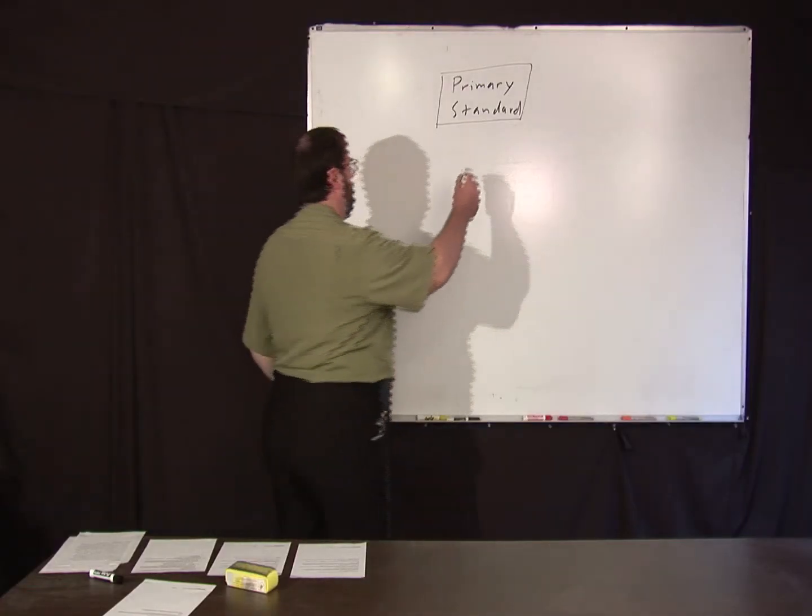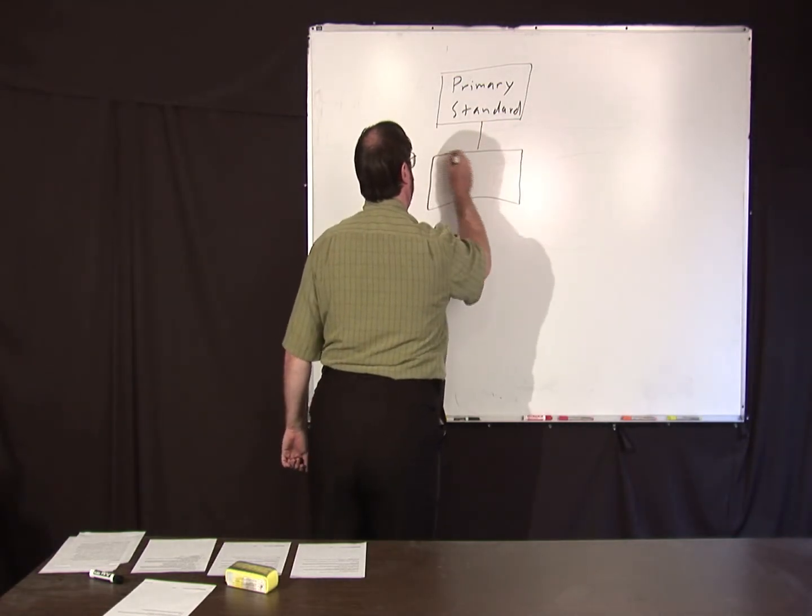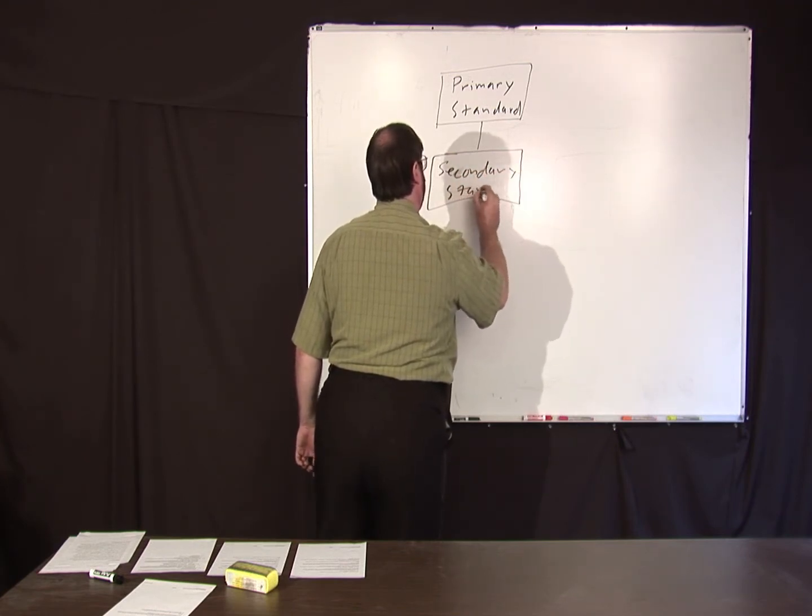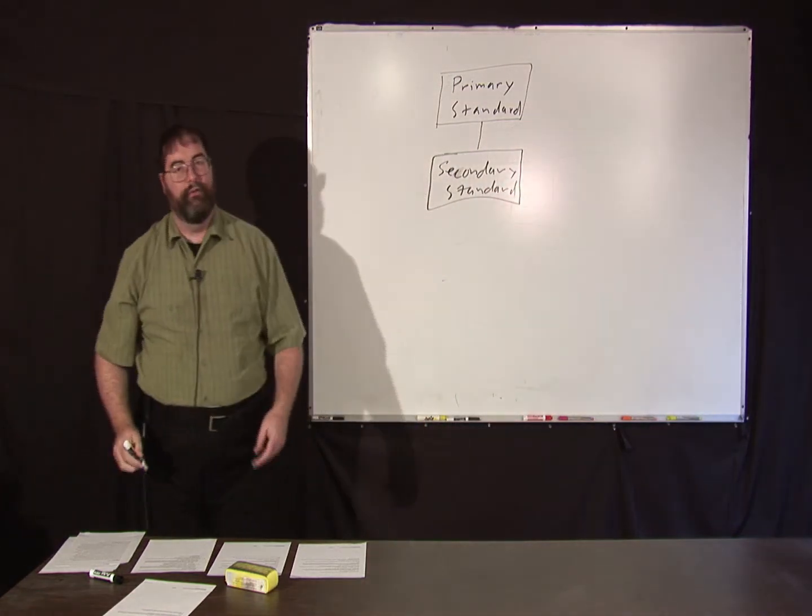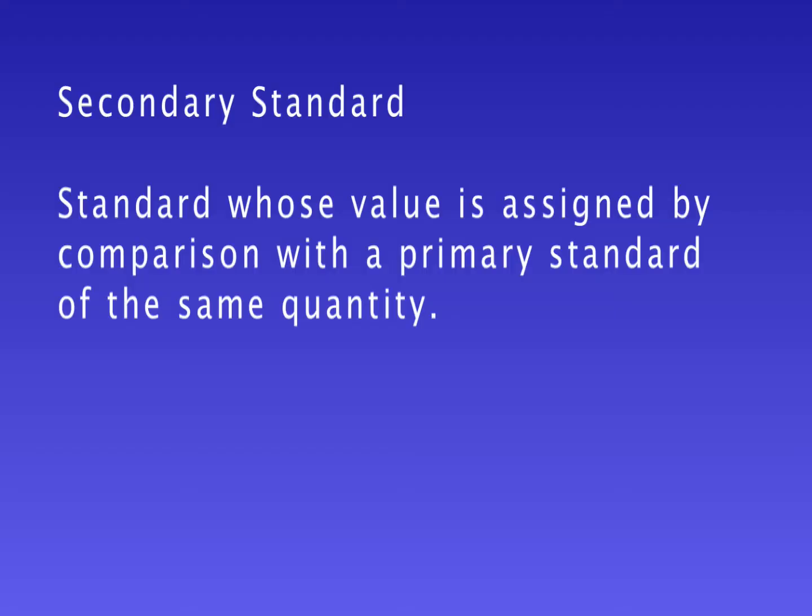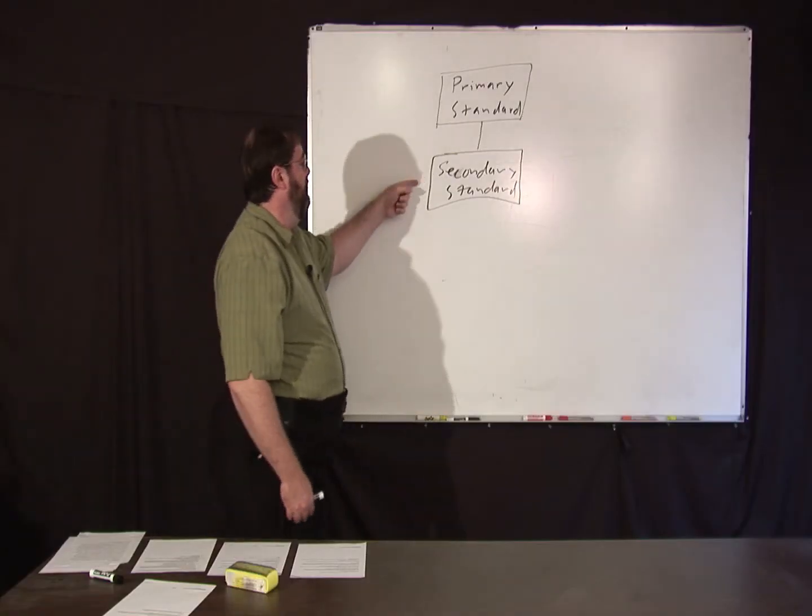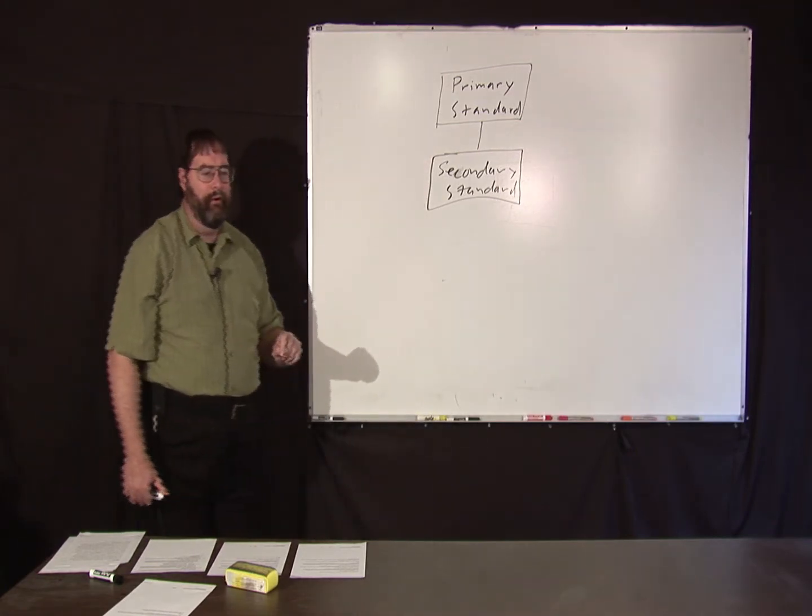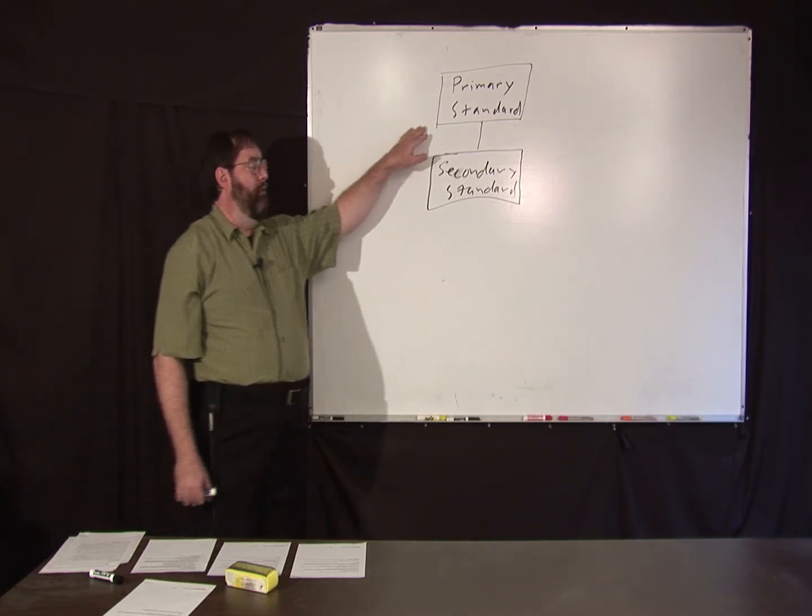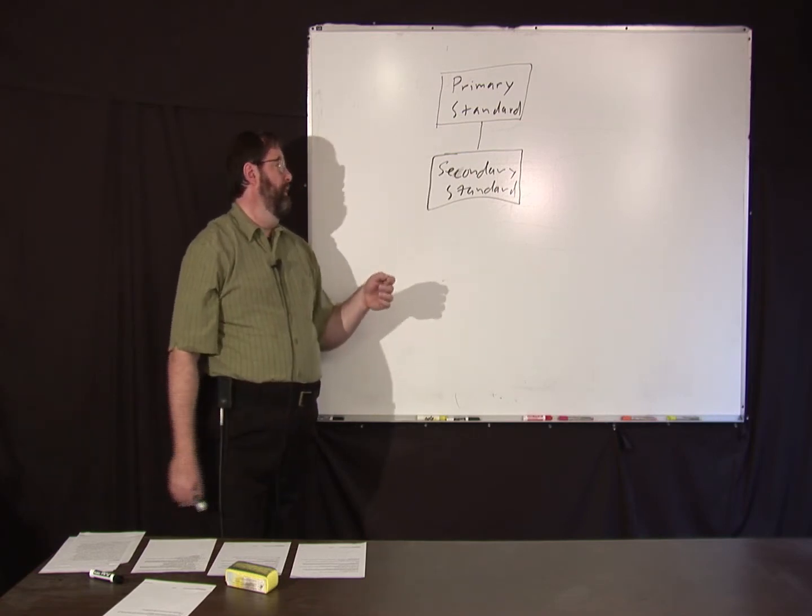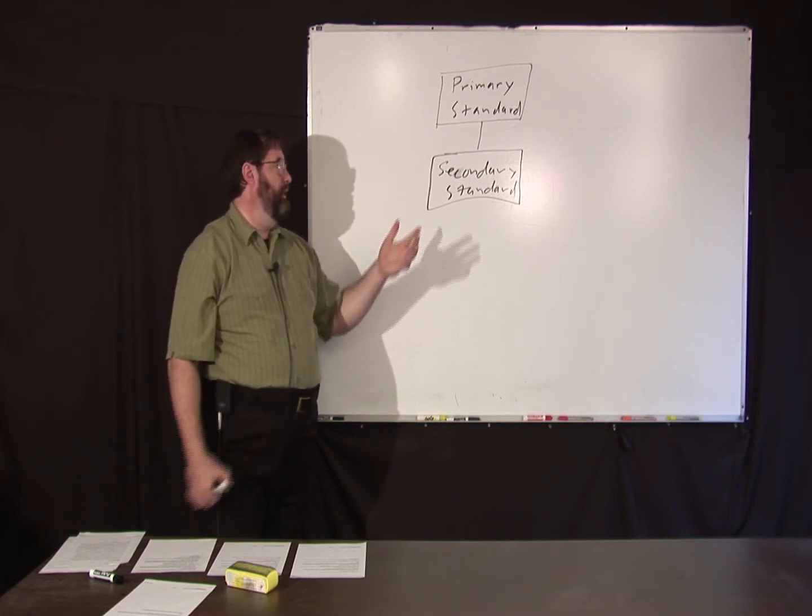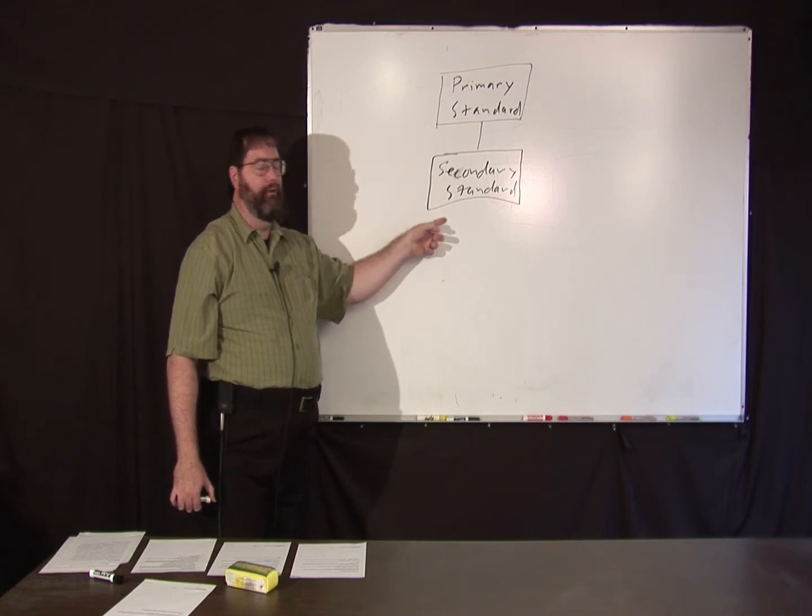From that, you can calibrate secondary standards. A secondary standard is defined by the VIM as a standard whose value is assigned by comparison with a primary standard of the same quality. So, you might be comparing a solid-state voltage reference somehow to a Josephson Junction voltage standard, for example, or somehow you've got a primary standard definition of the meter and you're comparing it against that, or possibly a triple-point cell compared to some sort of reference thermometer.